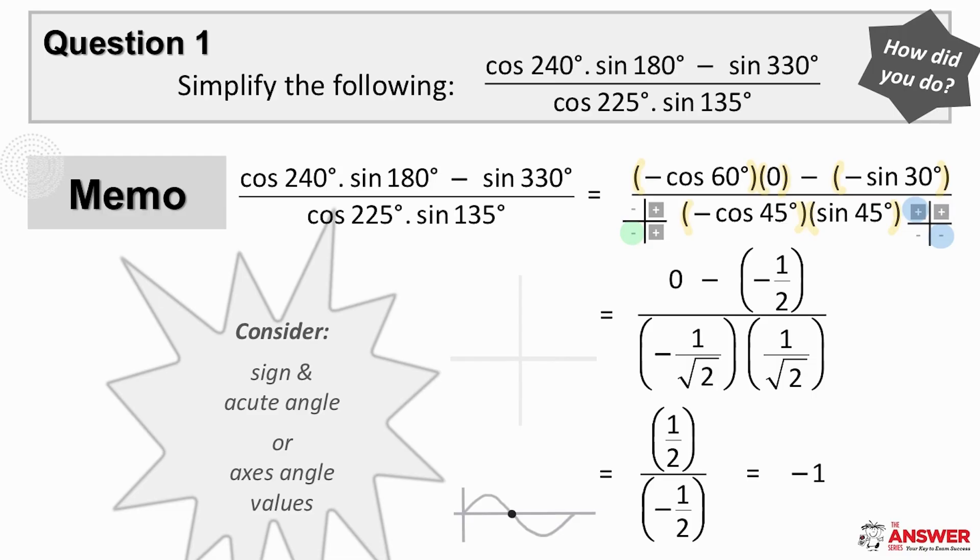Then we had one axis angle value and otherwise we are able to replace all these ratios with values from the special triangles so there is no need to use co-ratios. Our top left term is zero and here we have minus a half.